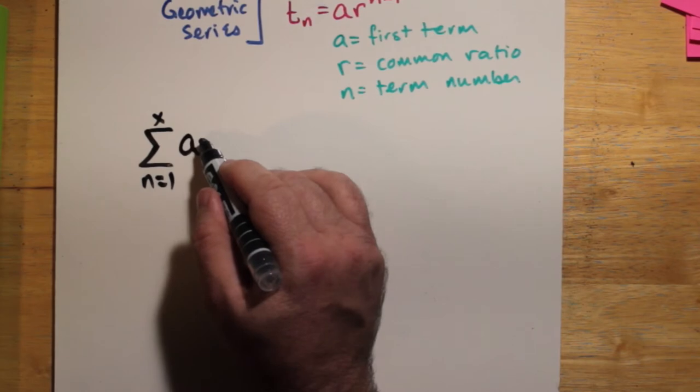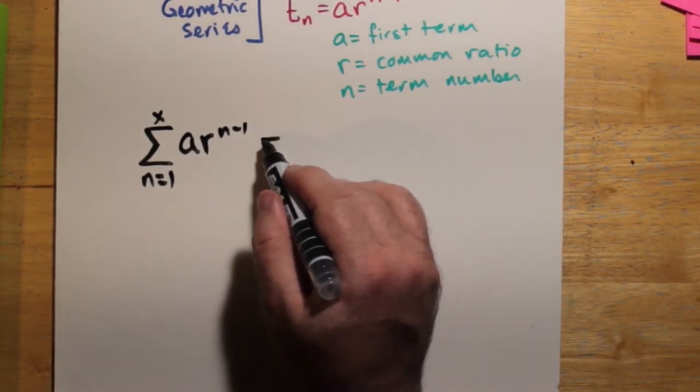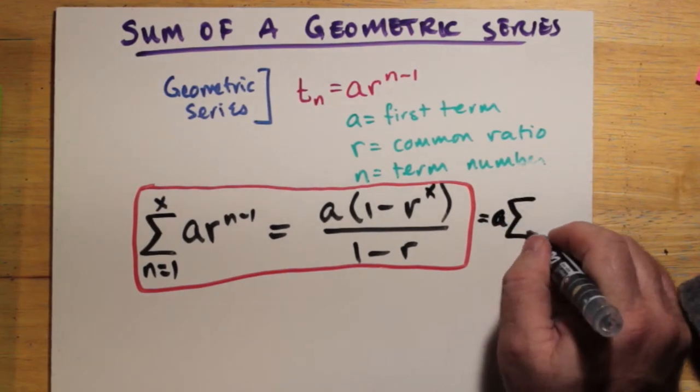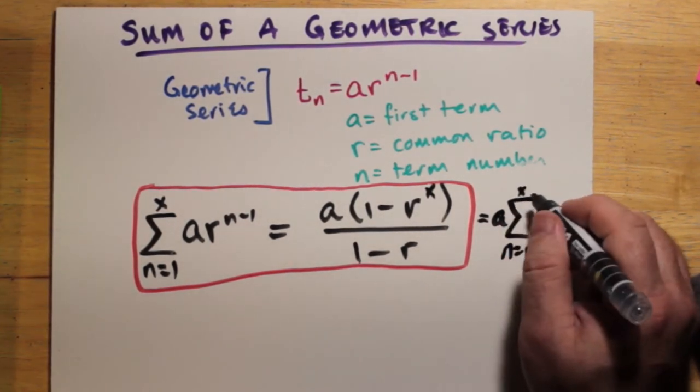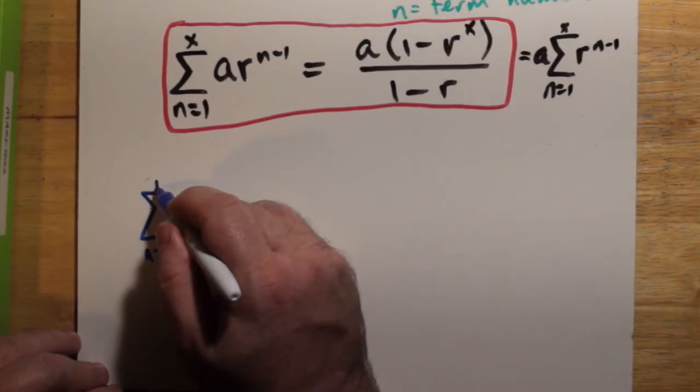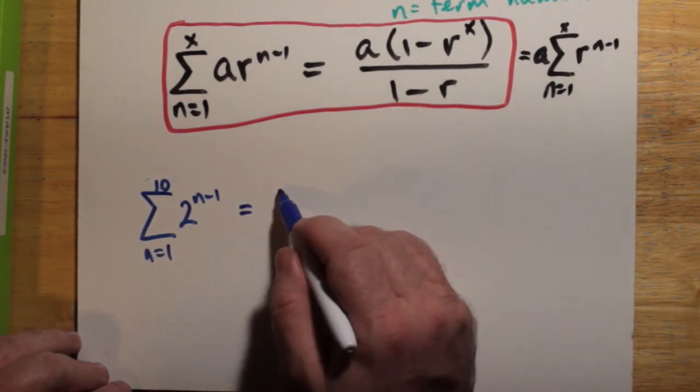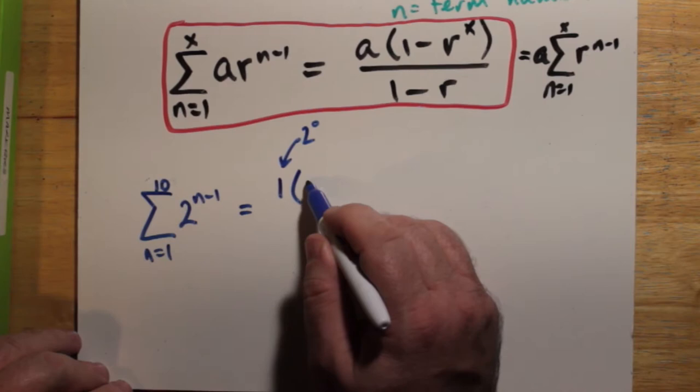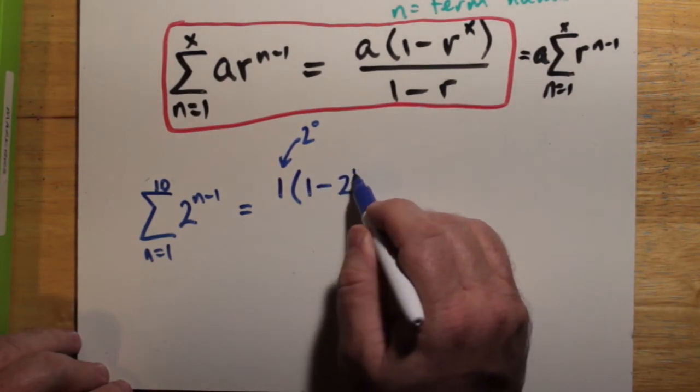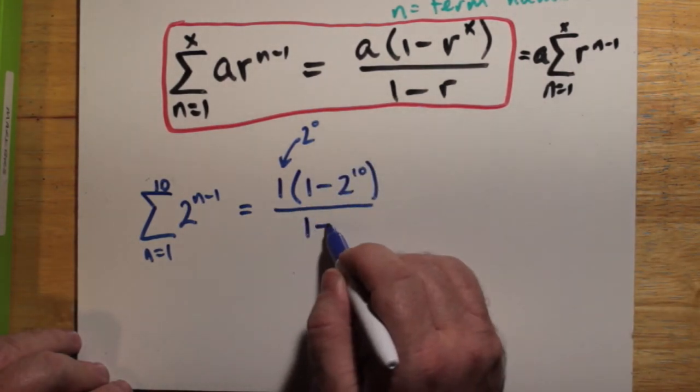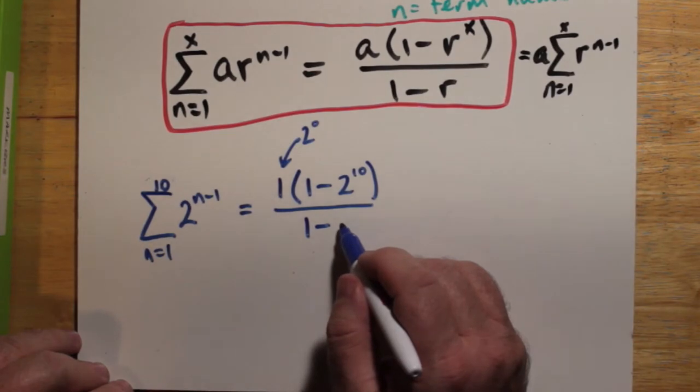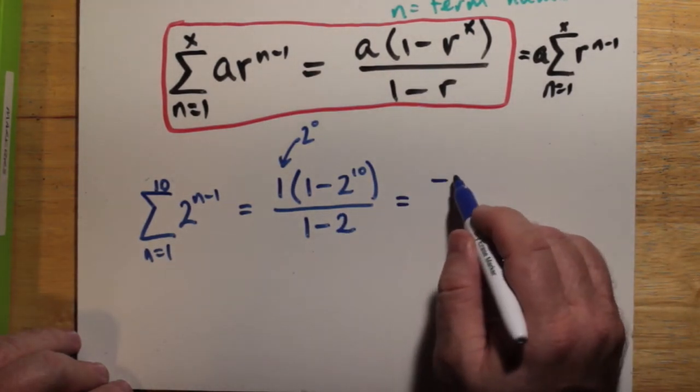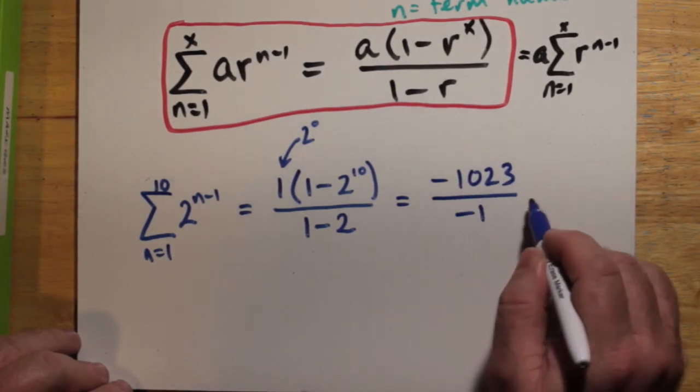Now, if we wanted to add up all the terms in the geometric series, you end up with a times the quantity 1 minus r to the x divided by 1 minus r. You can also take a outside the summation as well. Let's see if this works for 2 to the n minus 1 going from 1 to 10. It turns out that you can actually find this out yourself. You're going to get 1,023, positive number, even though in the calculation you have to work with negative numbers, which cancel anyway. What about some other patterns?